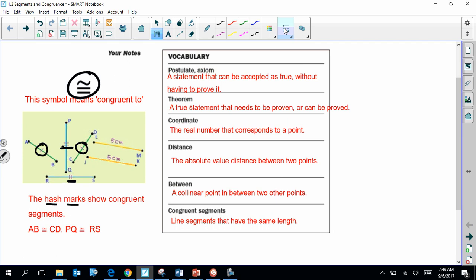A little bit about the vocabulary that you see here. Geometry is what's known as an axiomatic system. And an axiom and a postulate, they're synonyms for each other. And essentially all that means is that they are statements that can be accepted to be true without having to explain why they're true. A theorem is also a true statement, however, it's something that can't be accepted at face value. You have to explain why it's true. Coordinates are just numbers that correspond to a point.